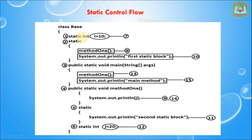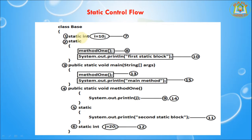First, static int i — up to here it checks the first step. After this, it checks if any static blocks are there or not — up to here are the static blocks. After that it checks if there are any static methods. This is the main method which is static. This is the static block, and after that it is the static variable.